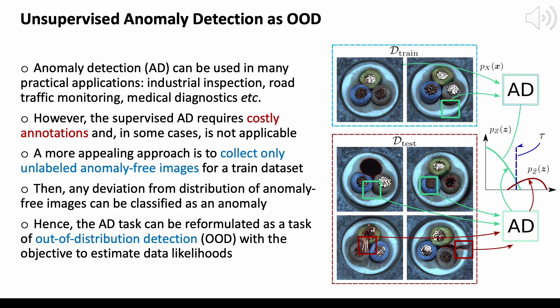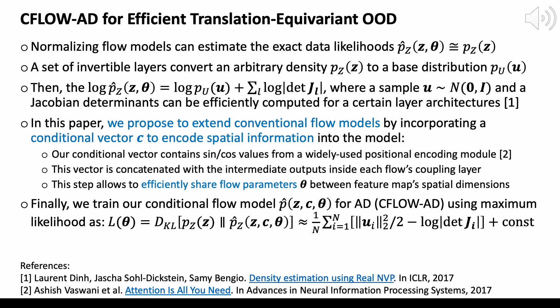However, supervised anomaly detection requires costly annotations. A more appealing approach is to collect only unlabeled anomaly-free images for the training dataset. Then, the anomaly detection task can be reformulated as a task of out-of-distribution detection with the objective to estimate data likelihoods. Unlike other models, normalizing flows can estimate the exact data likelihoods for out-of-distribution detection.